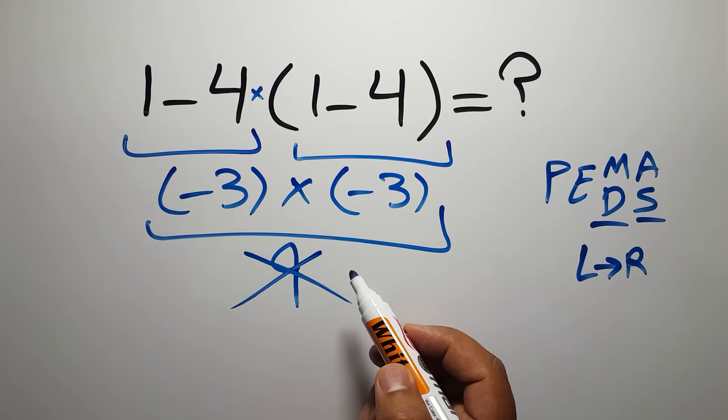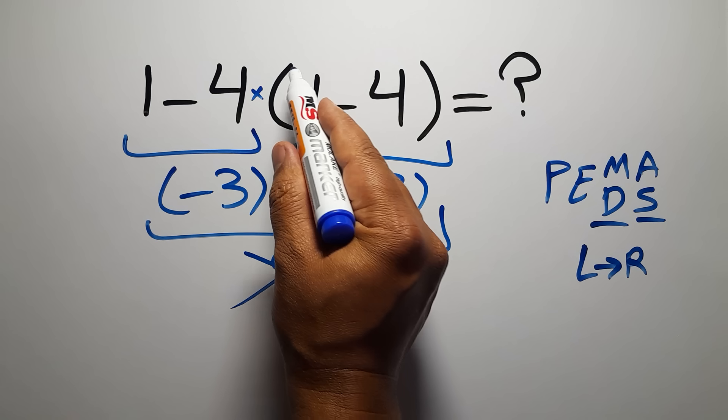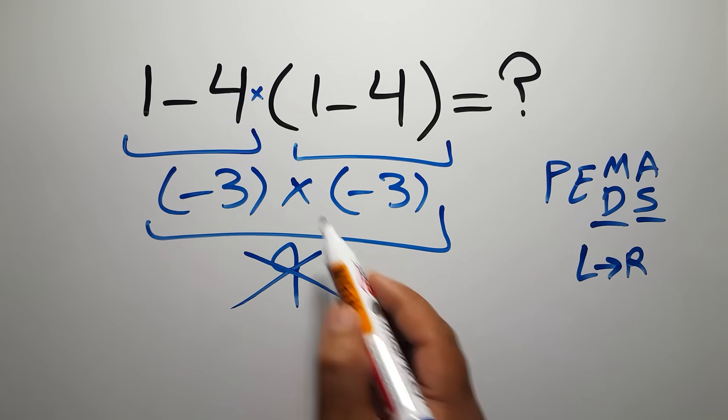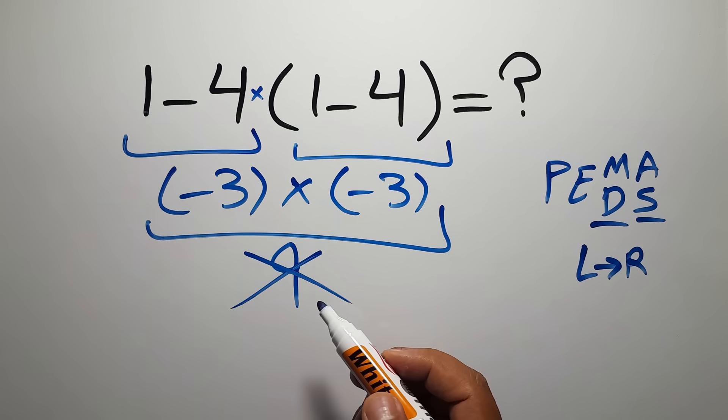So therefore, first this parentheses, then this multiplication, and finally this subtraction.